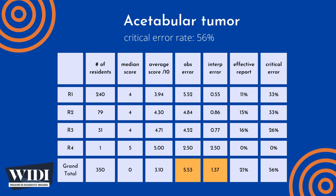We define an effective report to be one which achieves scores between 7 and 10 — in terms of letter grades, this would be an A or a B. In this most-missed case, 21% of residents produced effective reports.